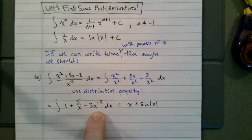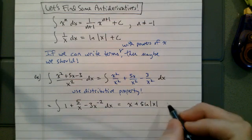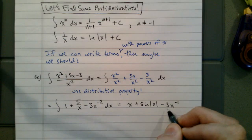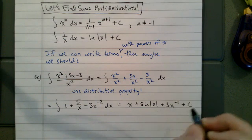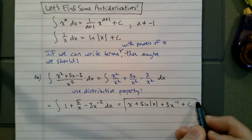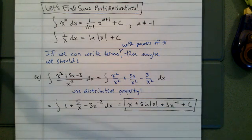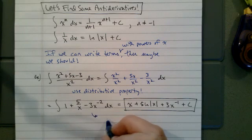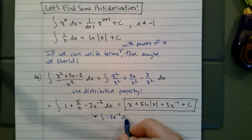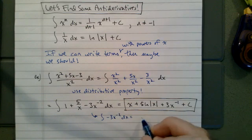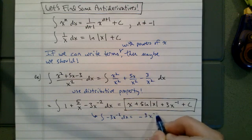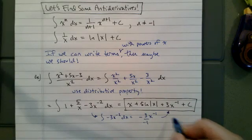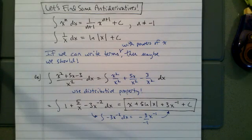We add one to the exponent for x to the negative 2. We get x to the negative 1, and then we divide by the new exponent. Specifically, negative 3 times x to the negative 2: we add one to the exponent, that becomes negative 1, and divide by the new exponent. So that's why we get the plus 3x to the negative 1.